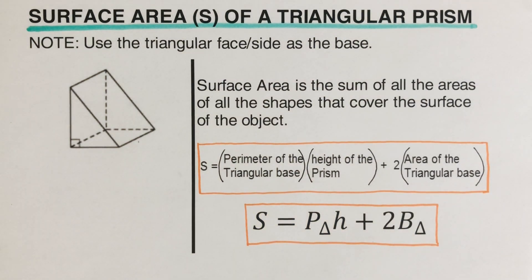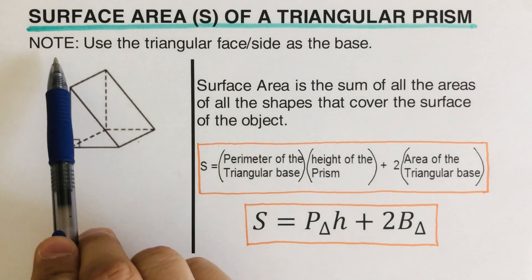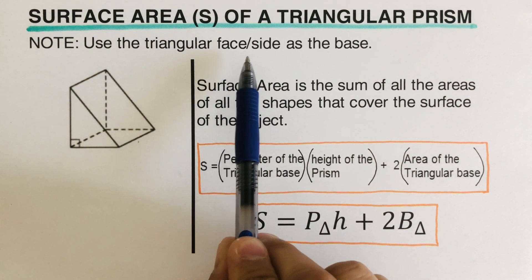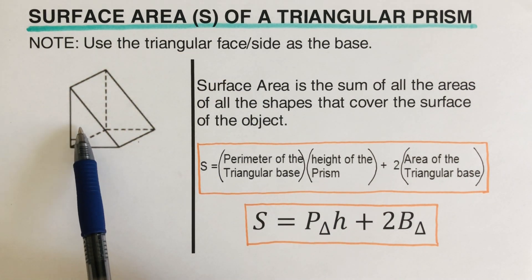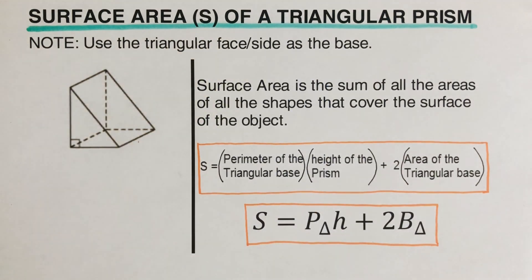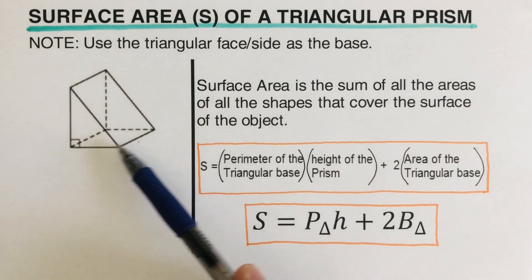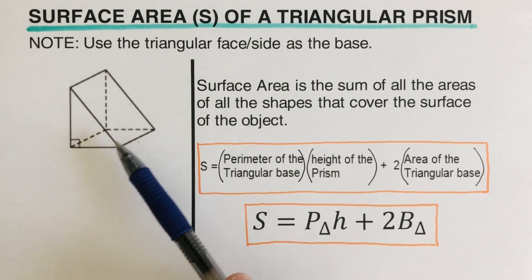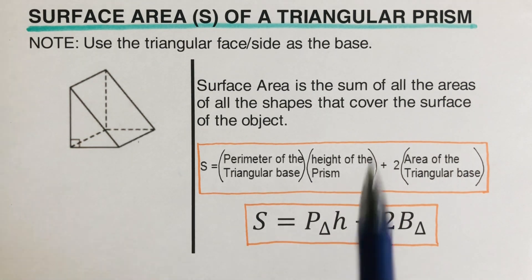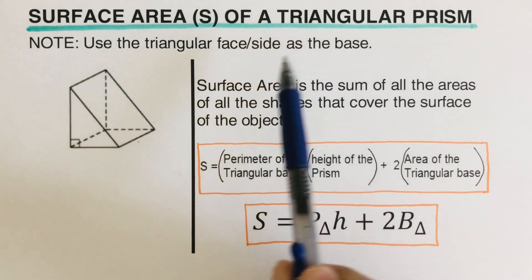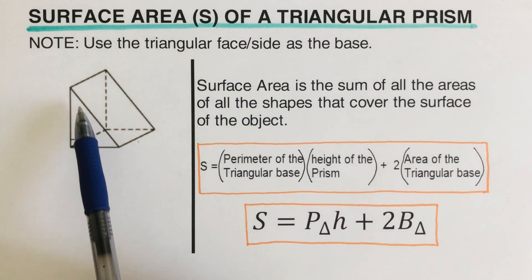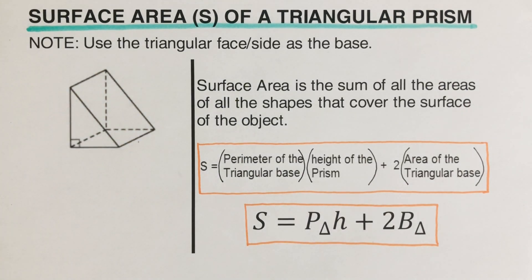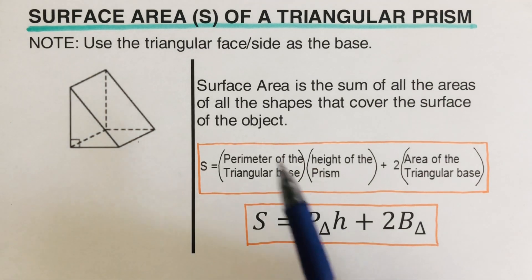Before we jump into the details, note that the triangular face — this side or the other side — will be considered as the base of the prism. Others might think the base is the rectangular shape at the bottom because that's where it's standing, but that is not correct. The base of a triangular prism will always be the triangular shape or triangular face.